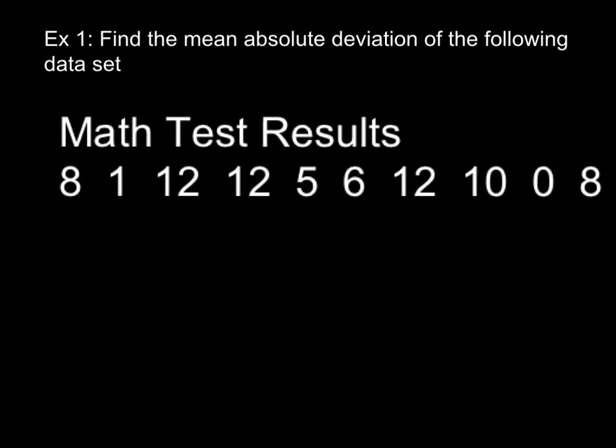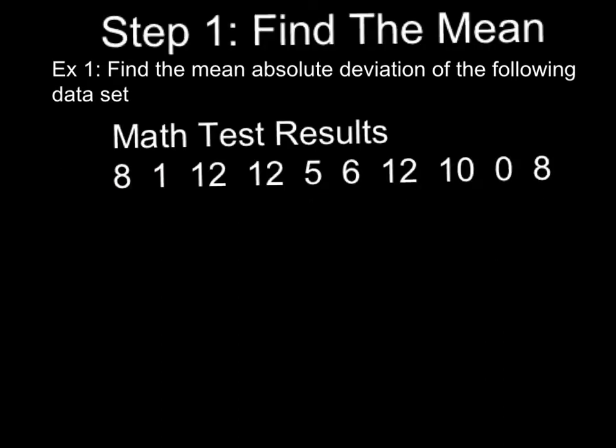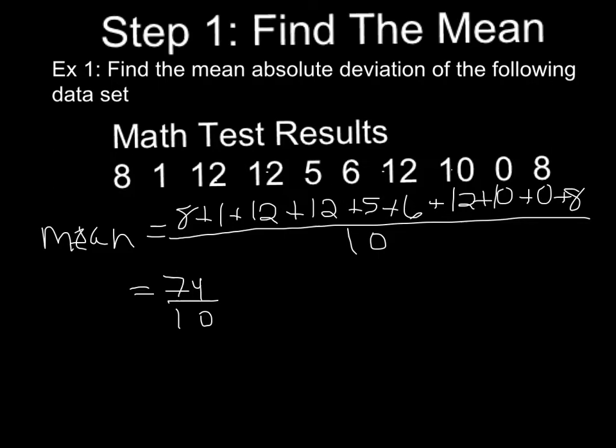And we are tasked with finding the mean absolute deviation. The first step to finding the mean absolute deviation is going to be to find the mean. So we're going to do that. Finding the sum of all of my data points, I get 74. I have 10 data points. So my mean is 7.4, or 74 divided by 10.